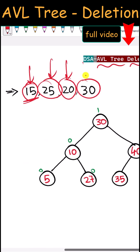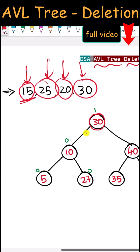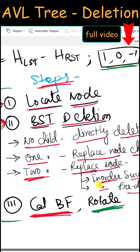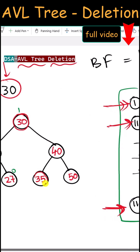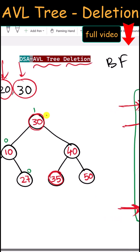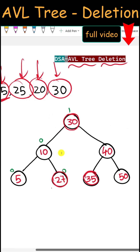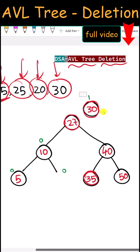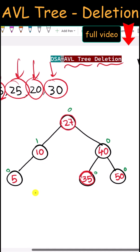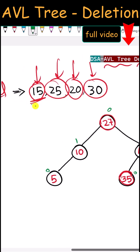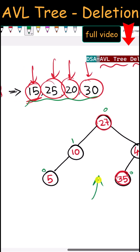Now let's delete node 30. This node has two children — we can replace 30 with its in-order successor (node 35) or in-order predecessor (node 27). We replace 30 with node 27 and delete node 30. All nodes are balanced, so no rotation is needed. This is how we delete nodes in an AVL tree.